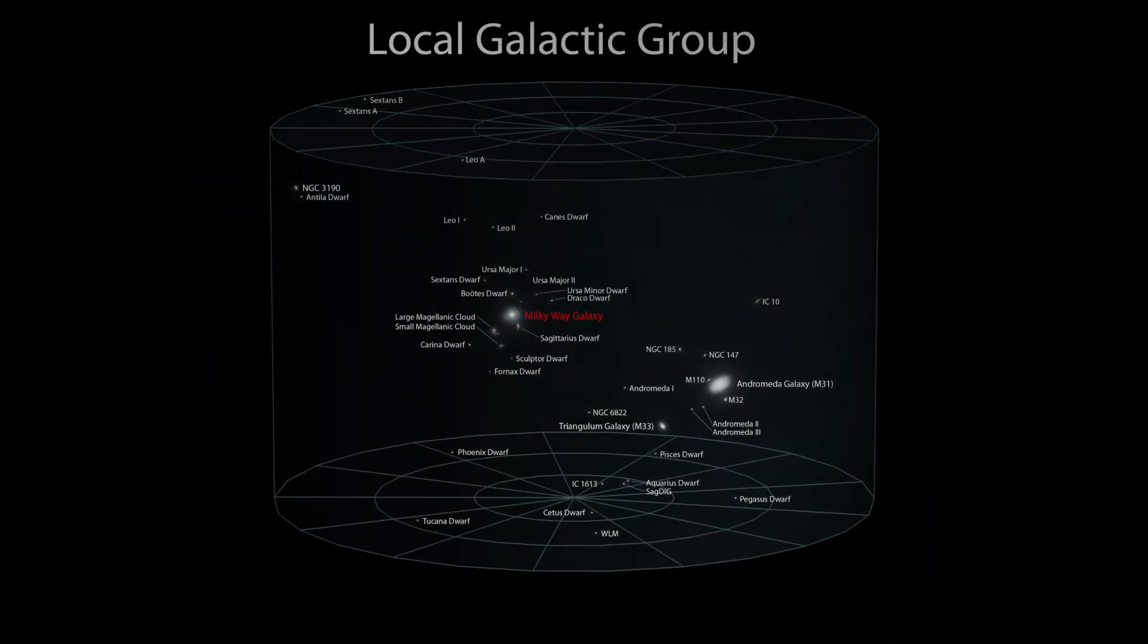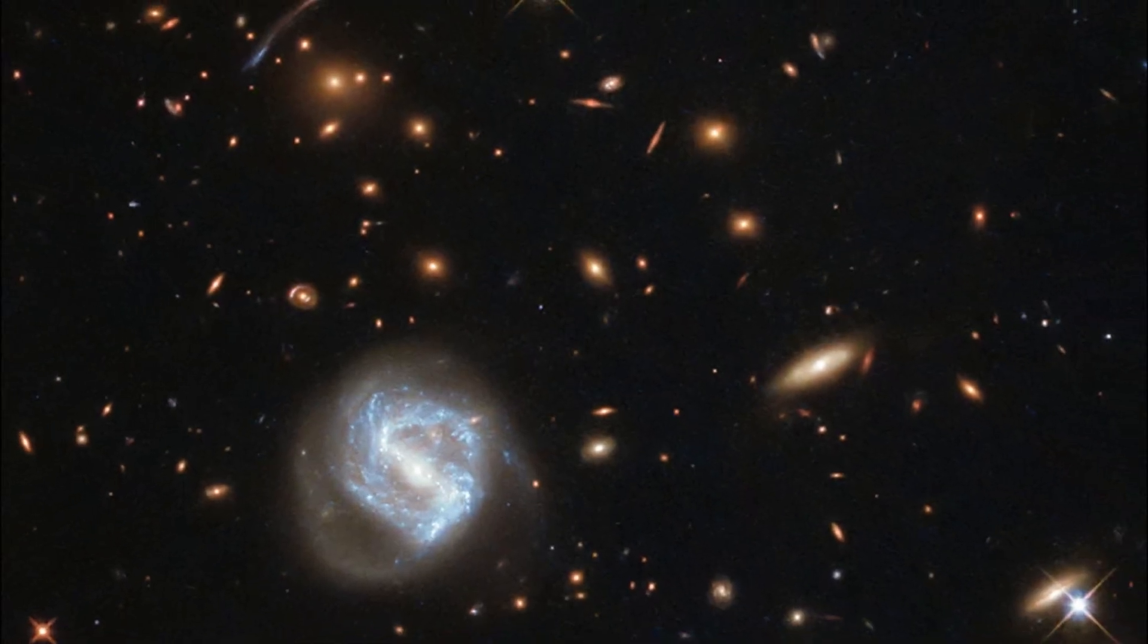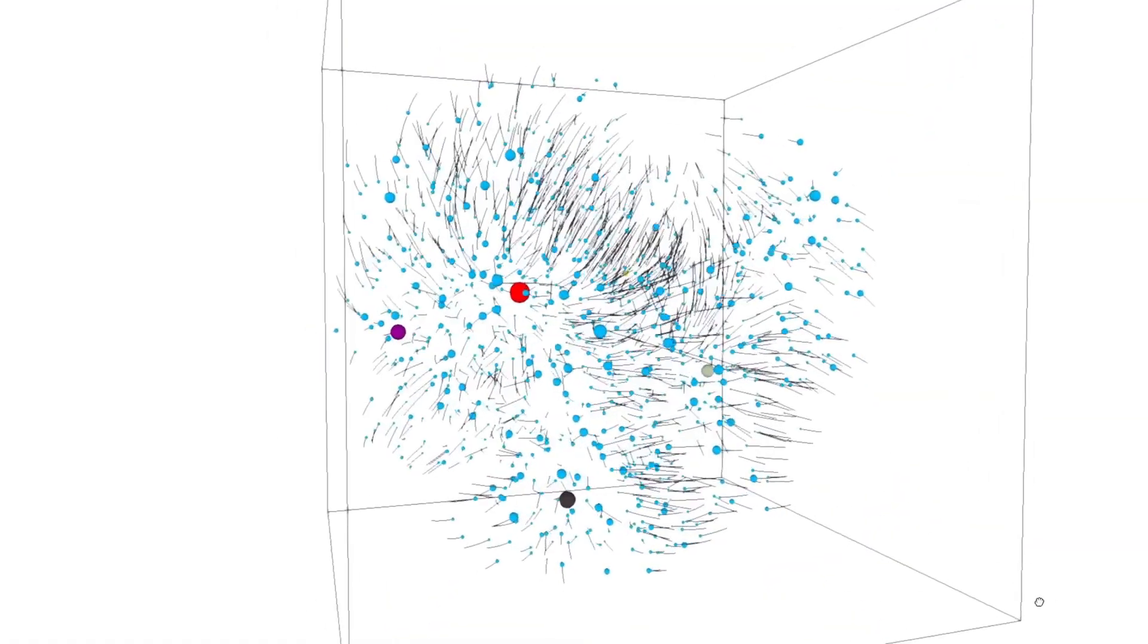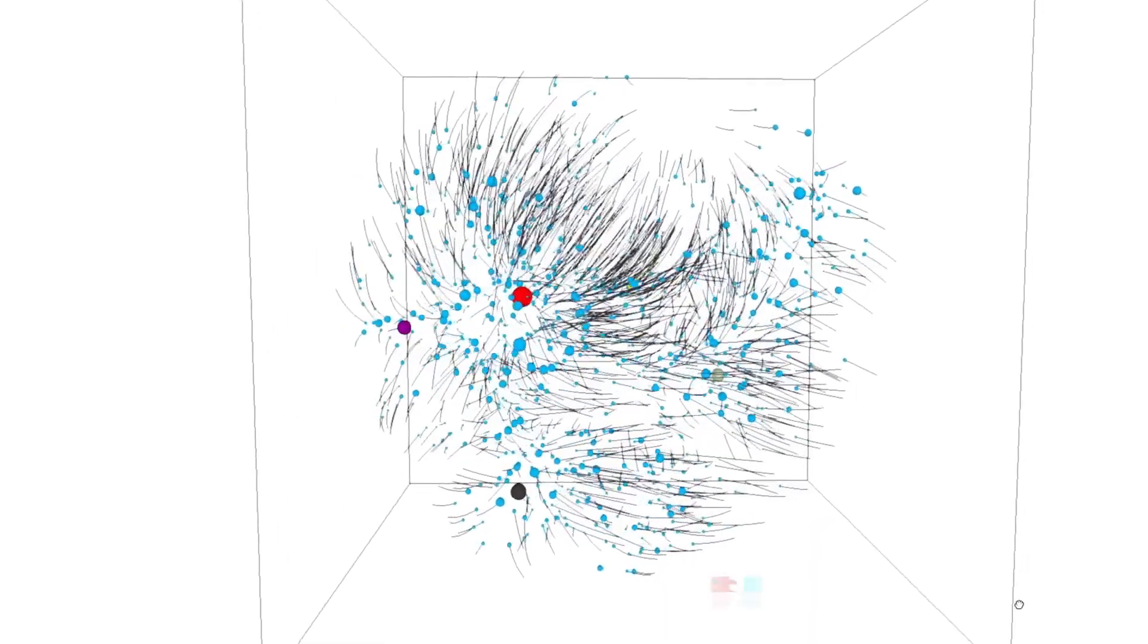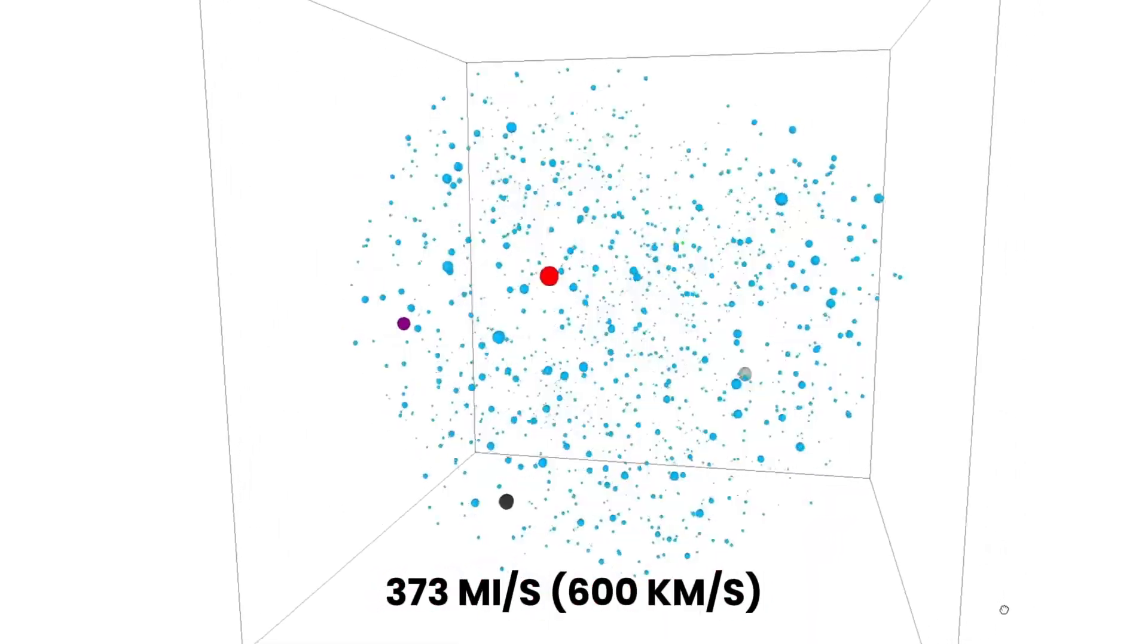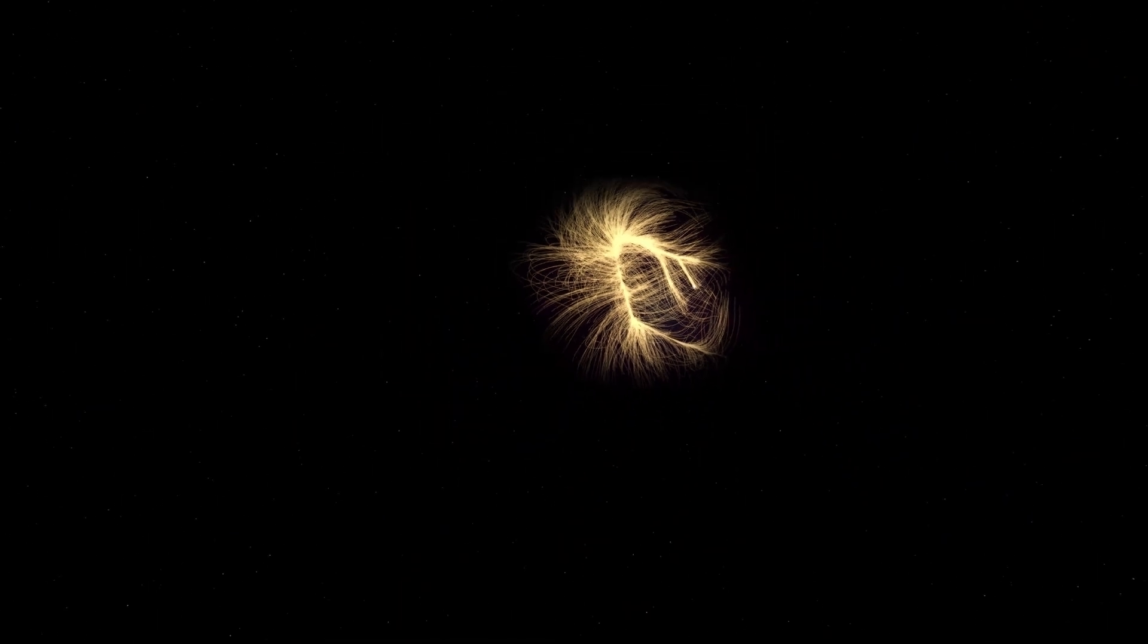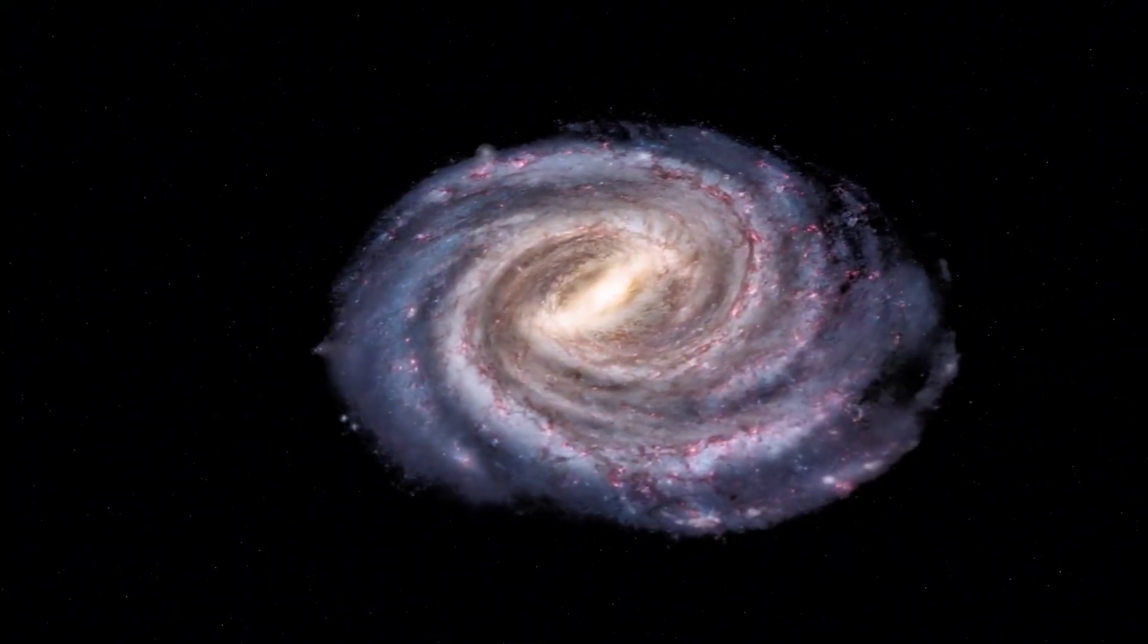The Milky Way belongs to the local group, 50-plus galaxies moving together, being drawn toward a massive structure nicknamed the Great Attractor. Our group surges that way at about 373 miles per second, 600 kilometers per second, guided by the gravity of enormous galaxy clusters.